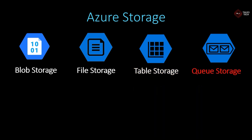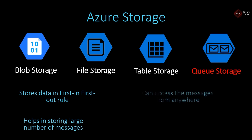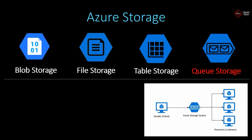The next storage is queue storage. It is mainly used to store data in first-in, first-out order. This storage is used to store a large number of messages, and those messages can be accessed from anywhere. It also supports REST API. The setup is simple: as you can see in this diagram, there is a sender who transmits messages, these messages are stored in Azure storage queue, and they are received by listeners in first-in, first-out manner — the first message stored is the first message received.